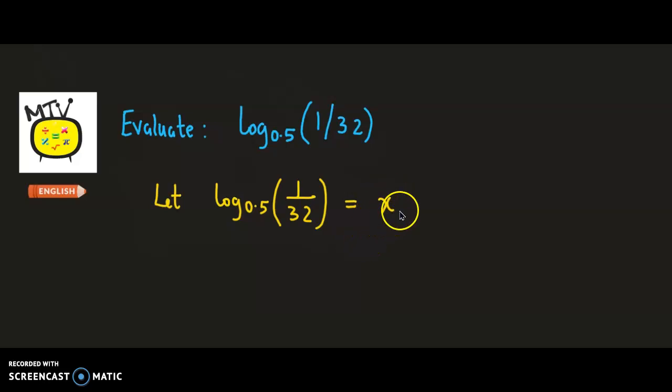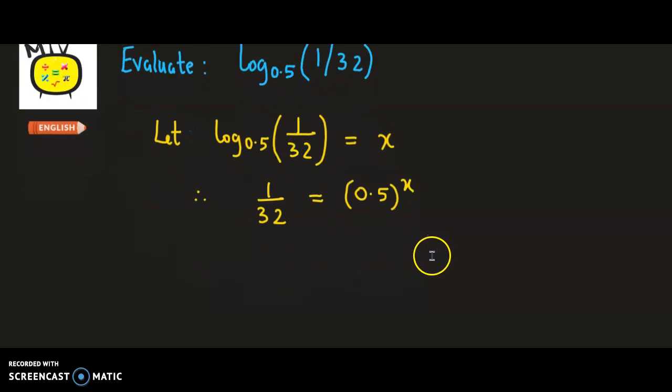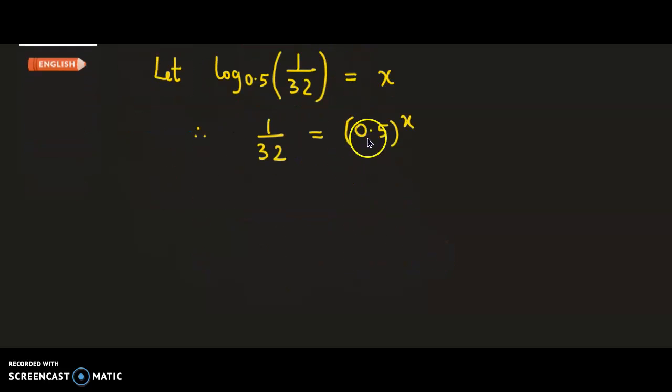Now in order to obtain the value of x, we convert the log form into its corresponding exponential form. We transfer this base, that is 0.5, onto the right hand side and we obtain 1 by 32 is equal to 0.5 raised to x. So we have converted the log form into the exponential form.